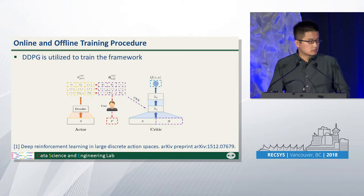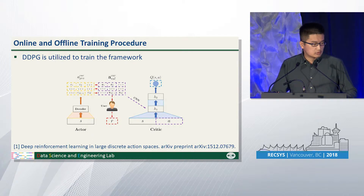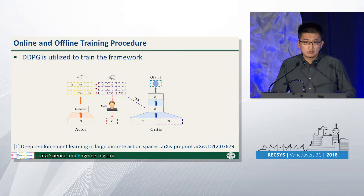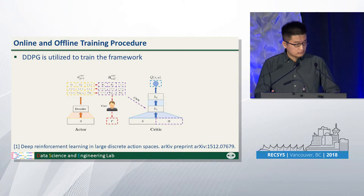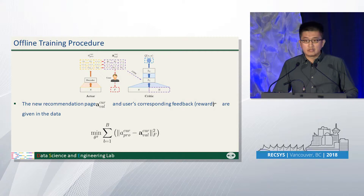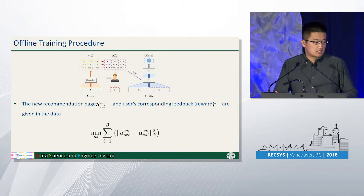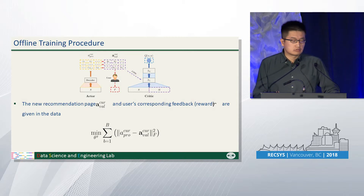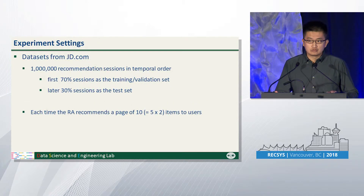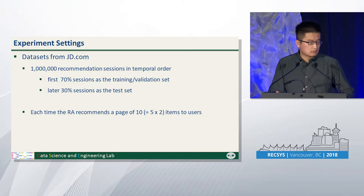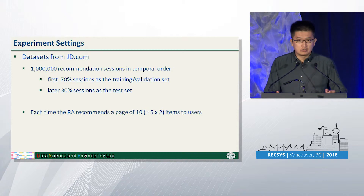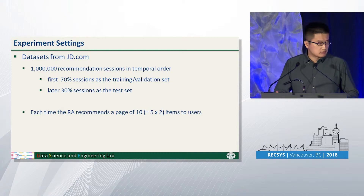We designed two methods — online and offline training — to train our framework in the real online system and based on user's historical data. Please refer to our paper for more details. Our experiment is based on data from JD.com. We randomly collected one million recommendation sessions in time order, using the first 70% of sessions for training and the later 30% for testing. Each time the recommender agent recommends a page of 10 items to the user.